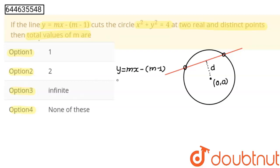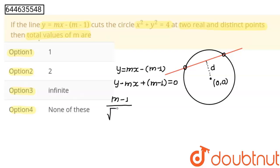I am going to write this line in a simpler form: y - mx + m - 1 = 0. I am going to find this distance. The center is the origin, so we get |m - 1| divided by the square root of (1 + m²), and this must be less than the radius, which is 2.